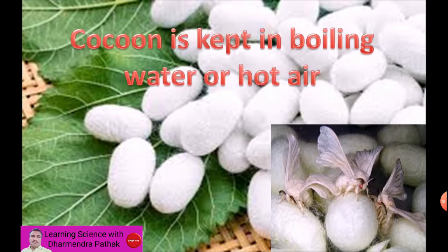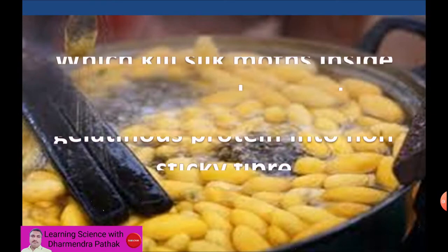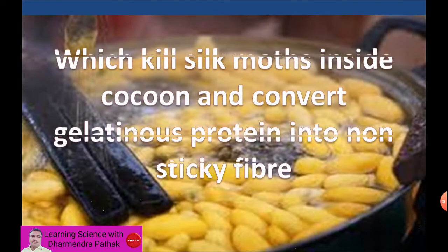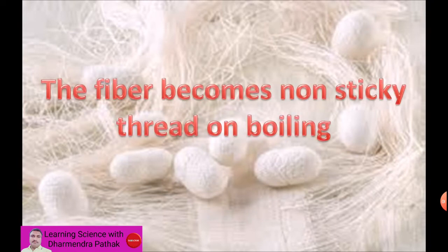The cocoon is kept in boiling water or hot air, which kills the silk moths inside the cocoon and converts the gelatinous protein into non-sticky fiber. The cocoon cover is made up of a protein substance which changes into fiber on boiling, becoming a non-sticky thread.